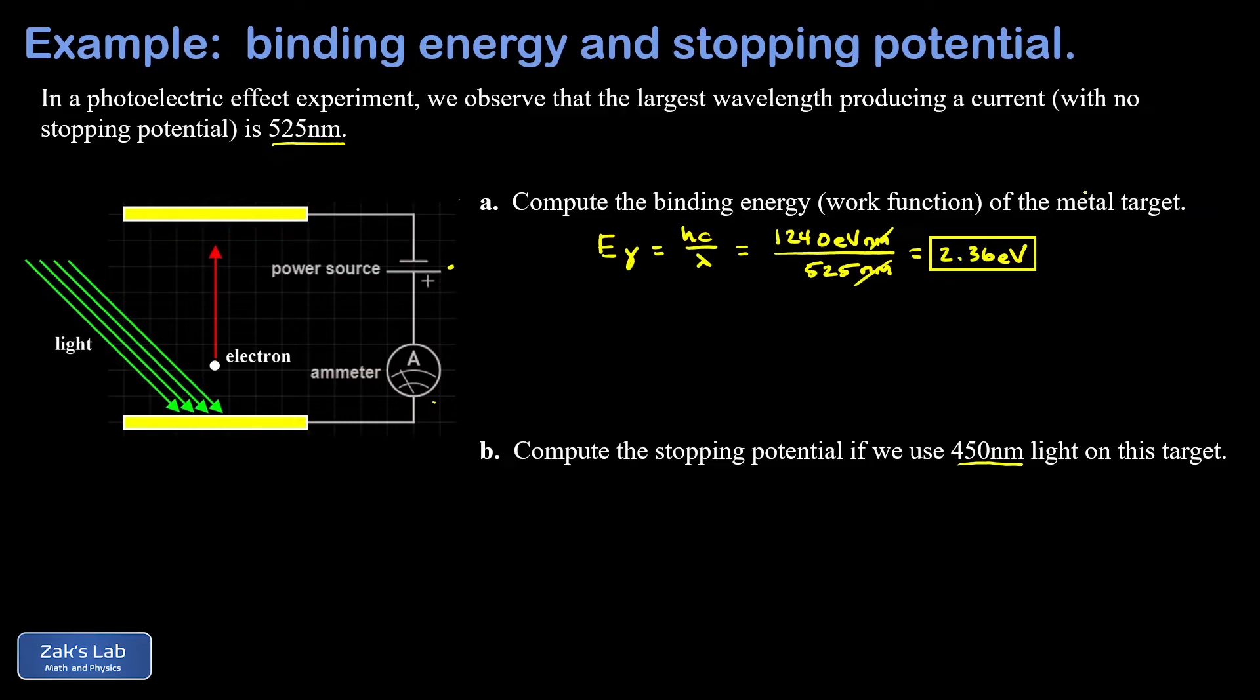What we want to figure out is how much kinetic energy do these electrons have after they've been ripped off the material. Remember that takes 2.36 eV of energy just to escape the material. There will be some leftover energy in the kinetic energy of the electron, and then we'll figure out the voltage we need to turn this up to to stop an electron with that much energy.